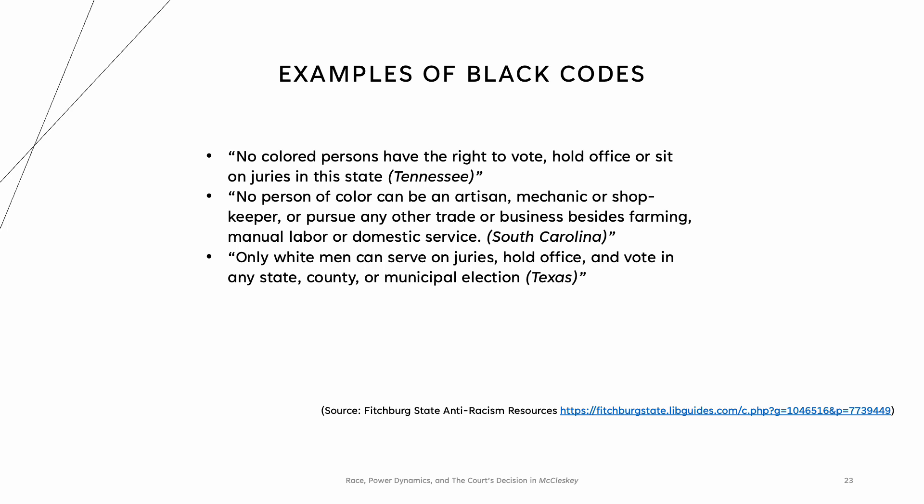Examples of Black Codes include: no colored persons have the right to vote, hold office, or sit on juries in the state — that was in Tennessee. No person of color can be an artisan, mechanic, or shopkeeper, or pursue any trade or business besides farming, manual labor, or domestic service — that was in South Carolina. Only white men can serve on juries, hold office, and vote in any state, county, or municipal election — that was in Texas.